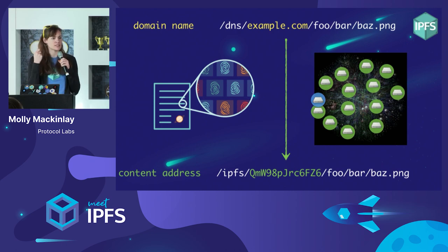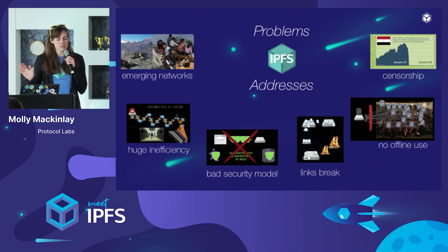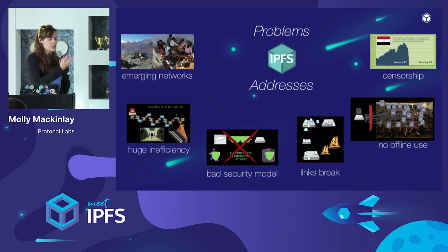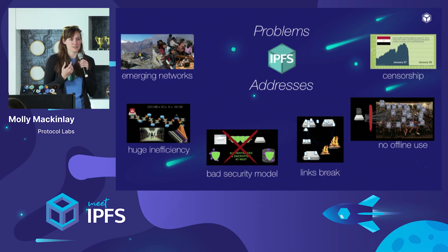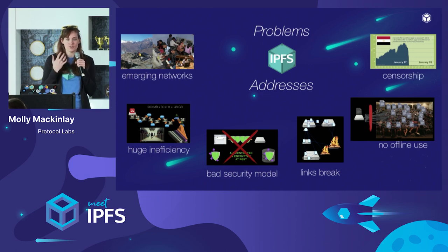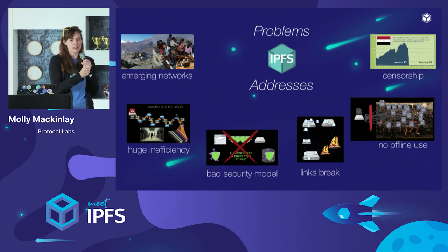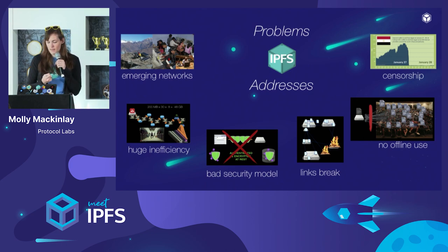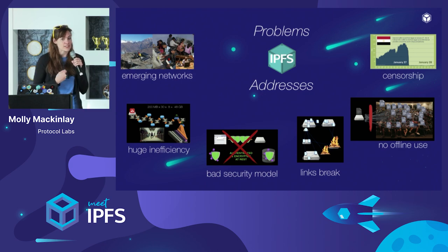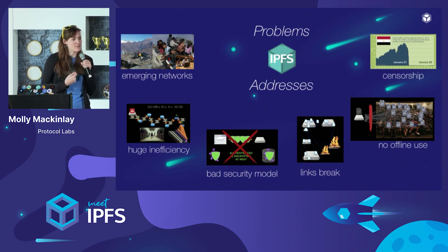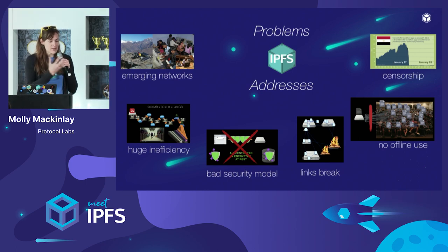IPFS aims to address a whole ton of problems. It can be useful for censorship resistance — making sure many people in a community can host and preserve data. It's useful for offline, local-first collaboration so that people can work together regardless of whether cell service or internet goes out. It helps avoid links breaking because you address data by its content instead of where it's hosted — so even when data moves around the network or the original provider goes offline, you can still find and address that content resiliently. It also has a better security model: you can validate that the thing you're fetching is the thing you meant to retrieve. With IPFS, you can validate that the CID you meant to retrieve matches the content you're served back from peer nodes.